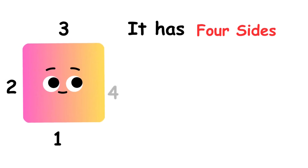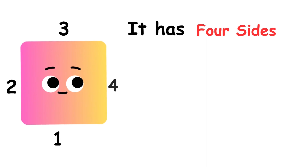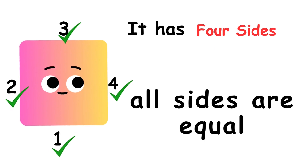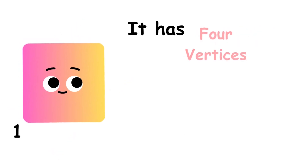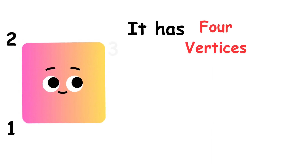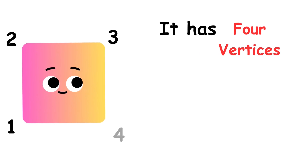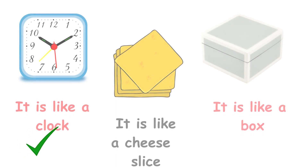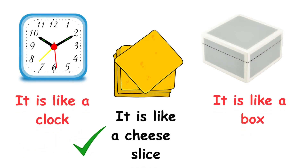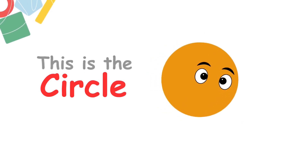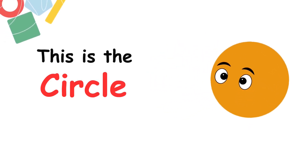This is the square. It has four sides — one, two, three, four — and all its sides are equal. It has four vertices — one, two, three, four. Its shape is similar to a clock, a cheese slice, and a box.